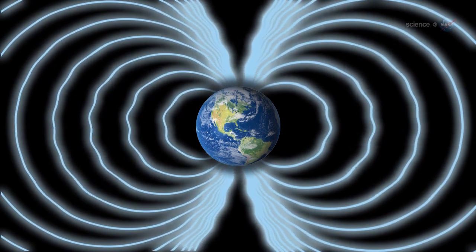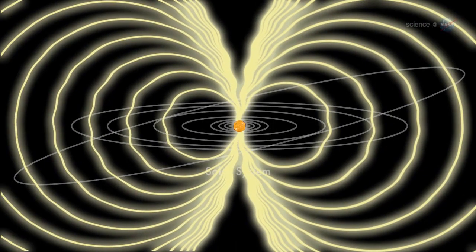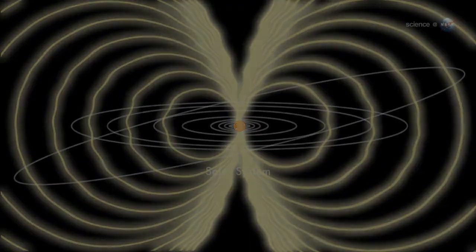Meanwhile, Earth moves through an even larger magnetic field, that of the Sun. Massive currents flowing beneath the solar surface give rise to a vast magnetic bubble that envelops every planet in the solar system.